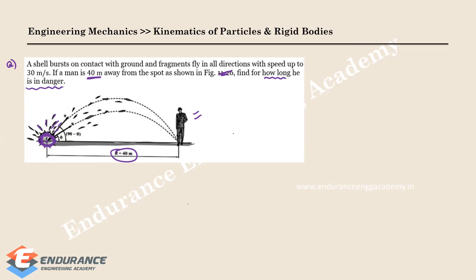The units are not mentioned in the question, but without the unit you will still be able to answer how long — which means they are simply asking how much time the person will be in danger. The person being in danger means the fragments coming out of the burst should actually hit him.